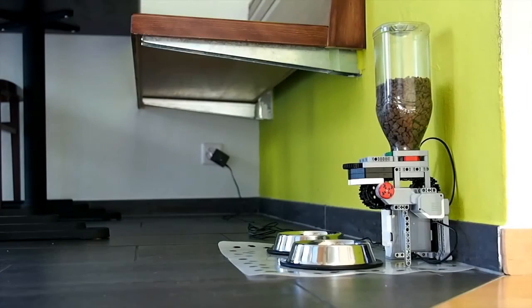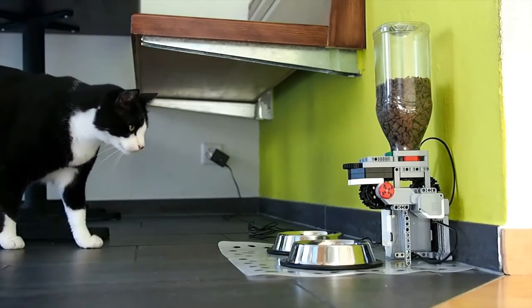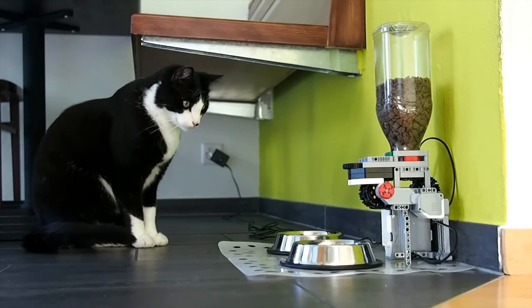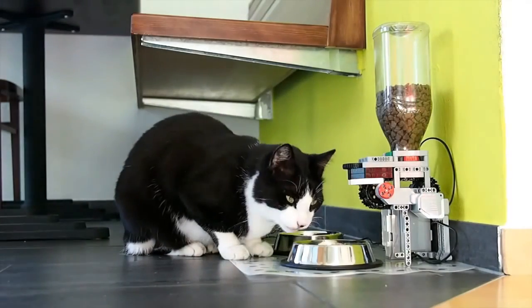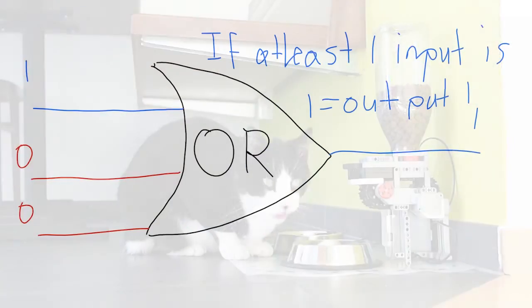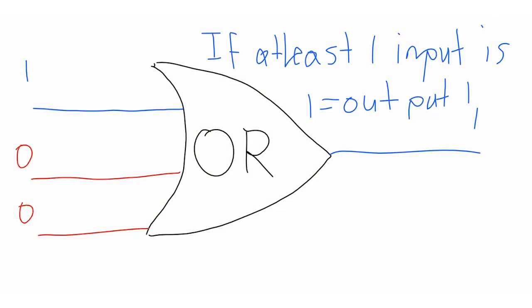So, how does this allow the computer to think? Well, these gates in combination form basic human knowledge. Let's say you have a computer which automatically ordered cat food when you ran out. The computer would have several inputs. Is there still cat food in the house? An OR gate would represent yes or no.